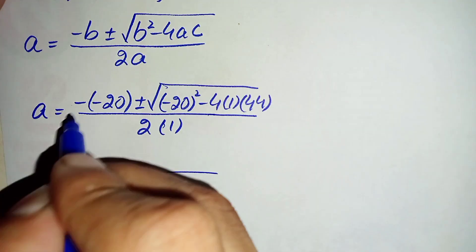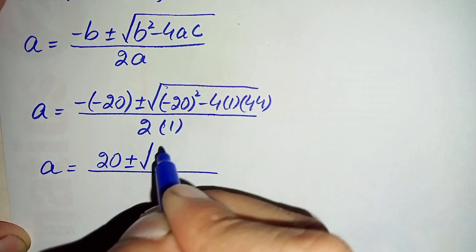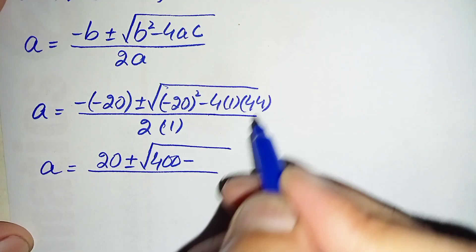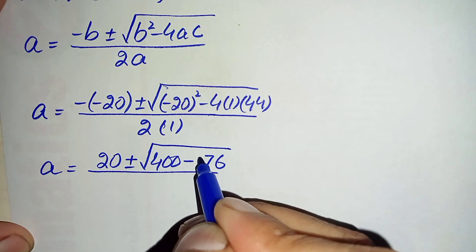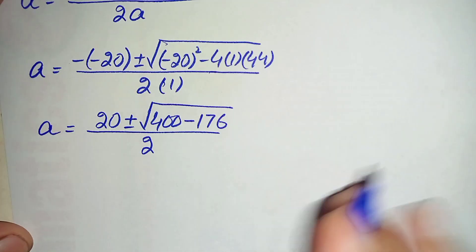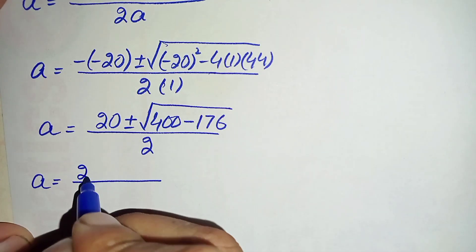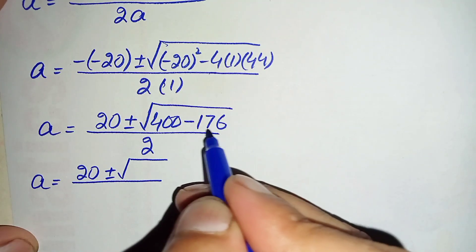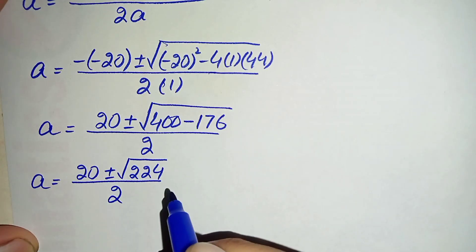Simplifying: negative times negative gives positive 20. Under the square root, (minus 20) squared is 400, and 4 times 1 times 44 is 176. The denominator is 2. So we have a equals 20 plus or minus the square root of 400 minus 176, divided by 2.